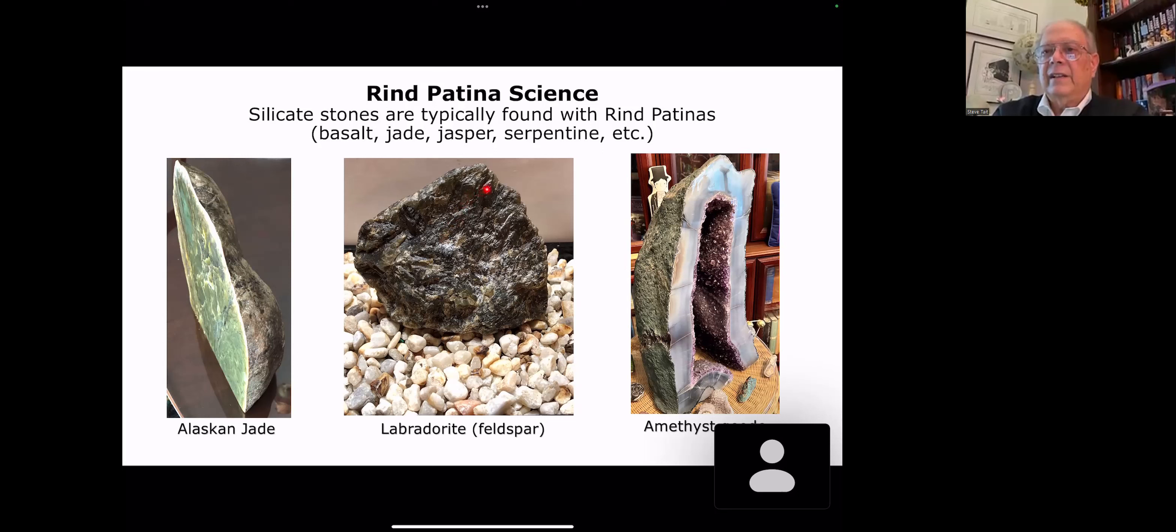Labradorite, this is the rind on labradorite. I tried to show the other side with the rind, wasn't able to, but on the other side it's been polished and it has beautiful iridescent colors of gold, blue, green. Again, though, if you saw this on the ground from this side, you'd say, well, that's just another ugly stone, although it's got some characteristic labradorite features.